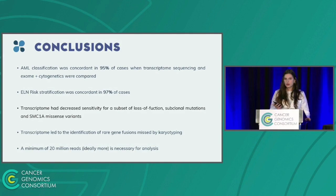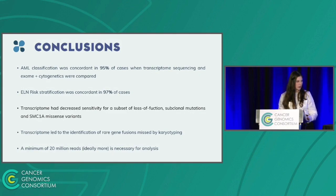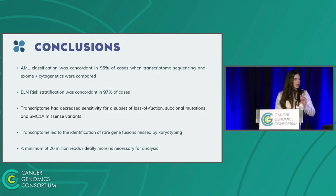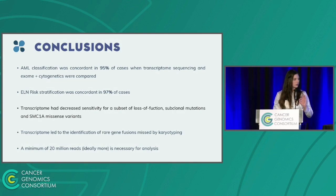In conclusion, AML classification was concordant in 95% of cases when transcriptome sequencing was compared to exome plus cytogenetics. Risk stratification was concordant in 97% of cases. Transcriptome showed decreased sensitivity for a subset of loss-of-function mutations, subclonal mutations, and SMC1A missense variants. However, this technique enabled identification of rare gene fusions missed by karyotyping. A minimum of 20 million reads — ideally more — is necessary to obtain reliable results.